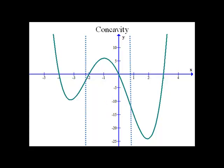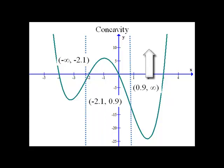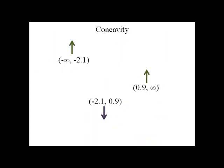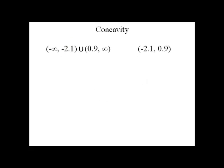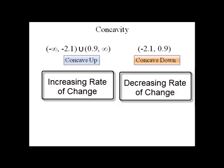Just like with increasing and decreasing, we're going to use interval notation. So it's concave up from negative infinity to negative two point one. Then it switches to concave down from negative two point one to zero point nine. Then it switches back to concave up from point nine on to infinity. So we have two places where it's concave up and one where it's concave down. We'll group the two that are concave up together and union those with a U: from negative infinity to negative two point one and from point nine to infinity, it's concave up. From negative two point one to point nine, it's concave down. This is important because where a function is concave up, it has an increasing rate of change, and where a function is concave down, it has a decreasing rate of change.